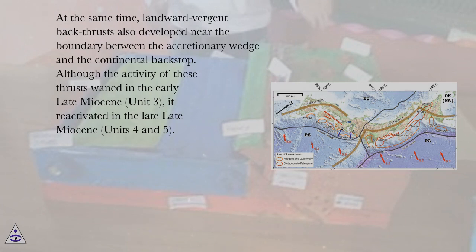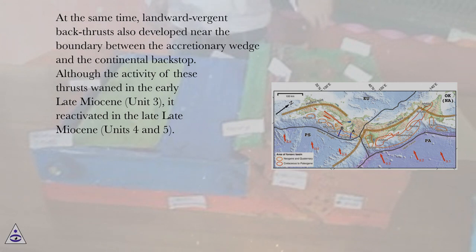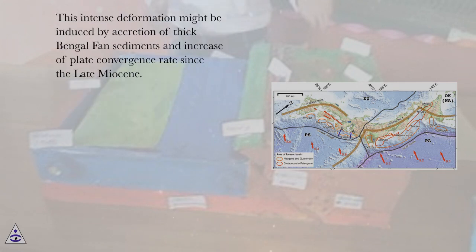Although the activity of these thrusts waned in the early-late Miocene, unit 3, it reactivated in the late-late Miocene, units 4 and 5. This intense deformation might be induced by accretion of thick Bengal Fan sediments and increase of plate convergence rate since the late Miocene.